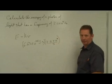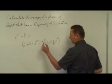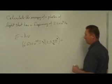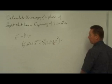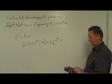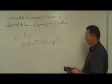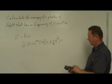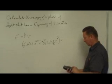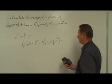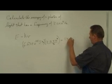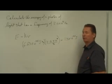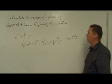Writing the frequency with cycles per second in the denominator, we can cancel the units dimensionally, and calculate the energy of a single photon. 6.63 times 10 to the negative 34, times 2.0 times 10 to the eighth, gives us 1.3 times 10 to the minus 25 joules — a very small amount of energy, but you're only dealing with one photon of light.